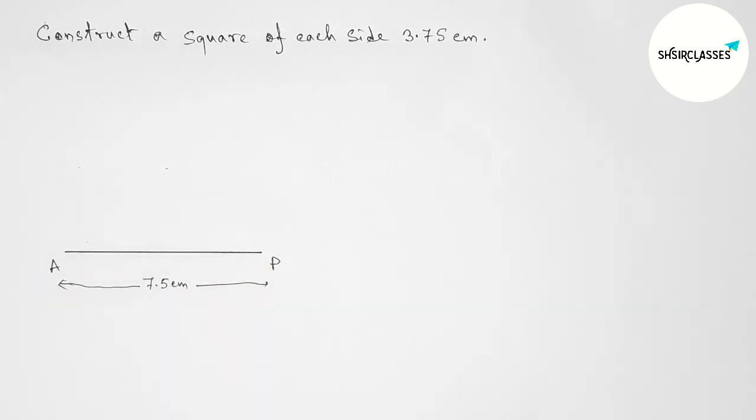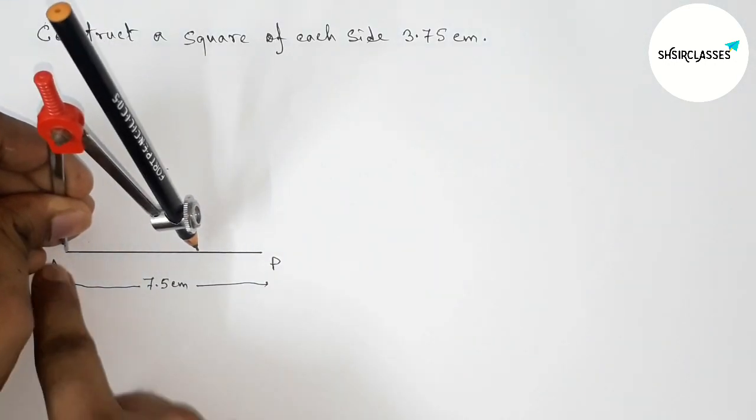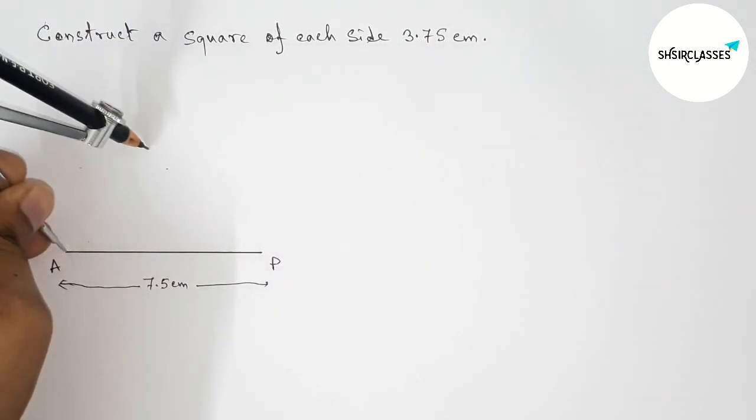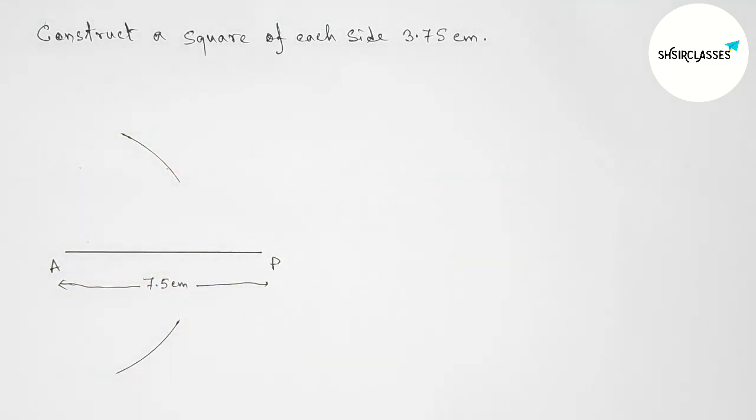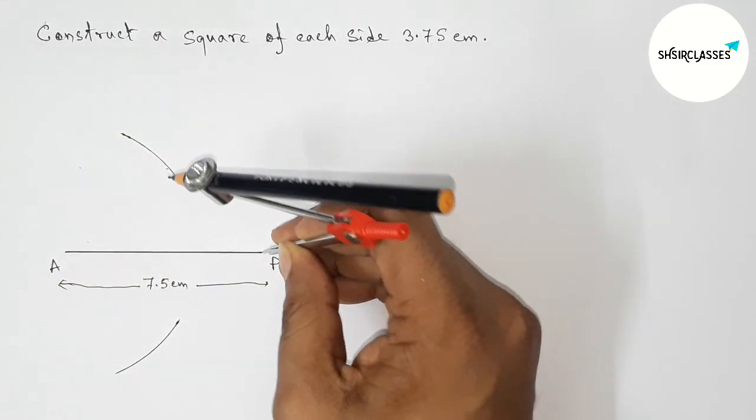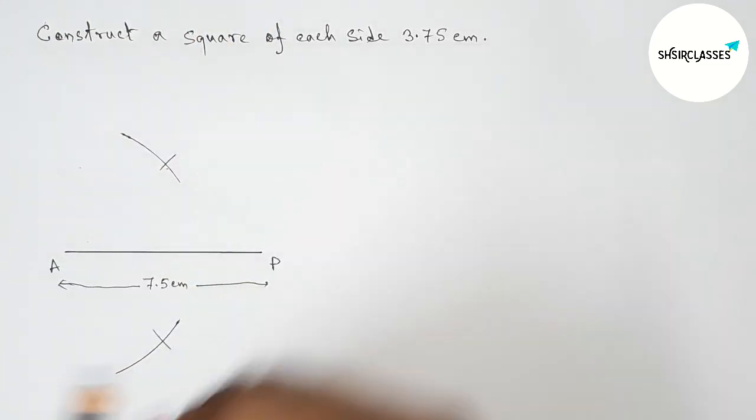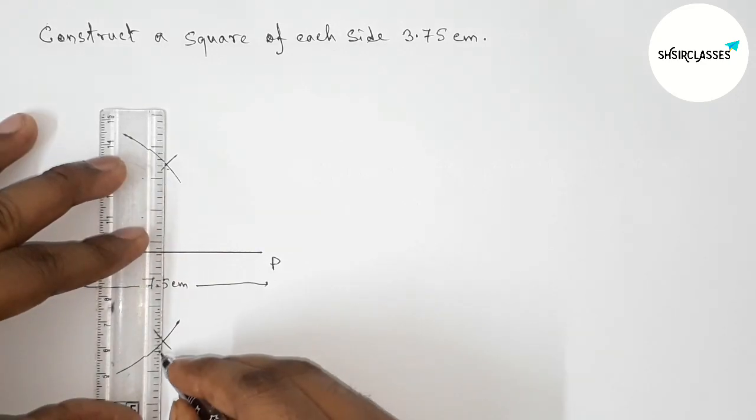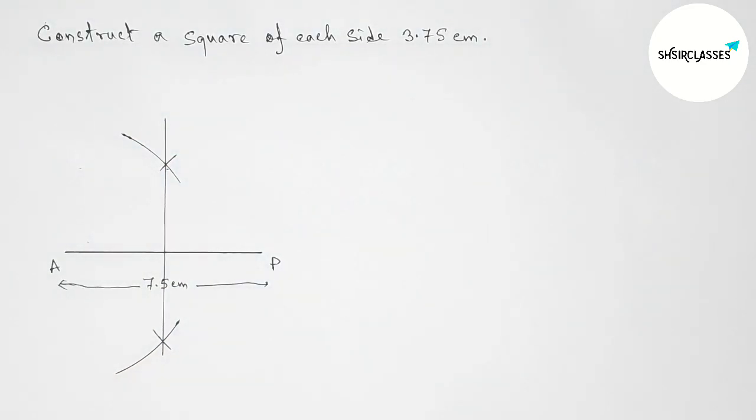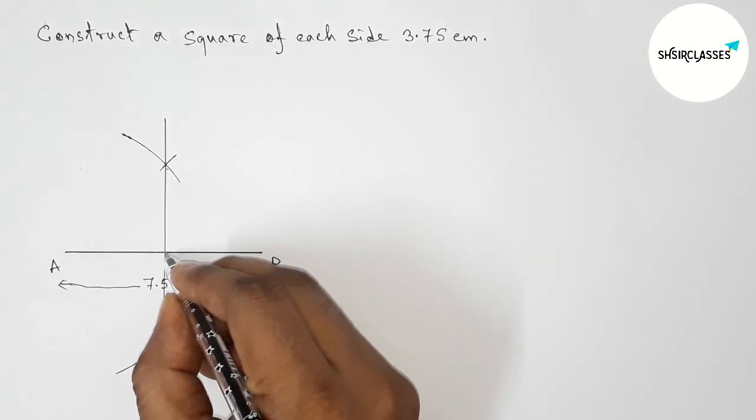Now bisecting the line AP, so putting the compass on point A and taking greater than half of AP and drawing here arc and drawing here arc again with same length. Putting the compass here and cut here and cut here. So now joining this line which bisects the line AP perpendicularly here at a point.